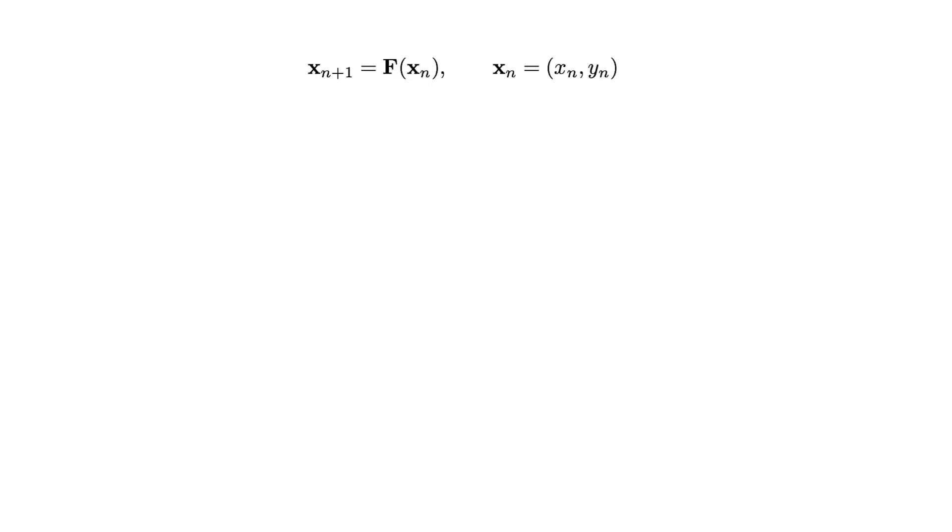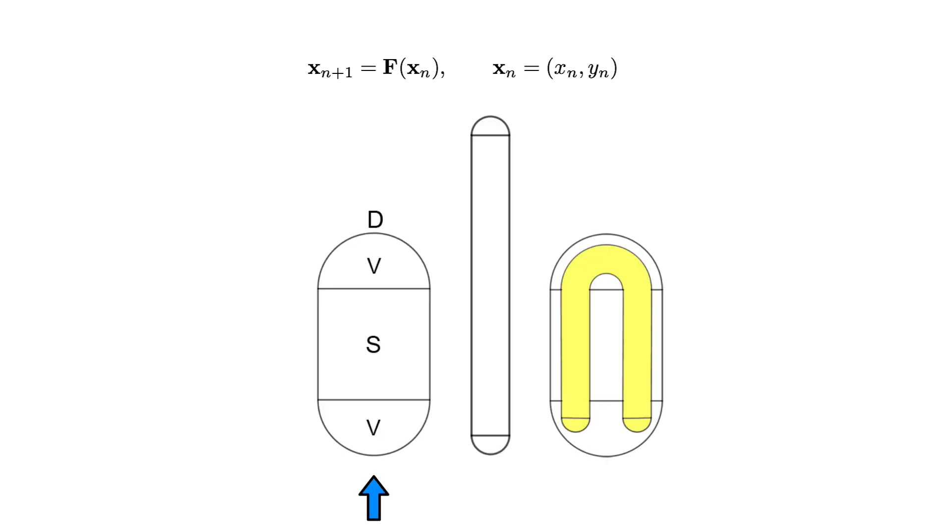To begin, we shall consider a two-dimensional map, say xn+1 equal to f of xn, where here x is a point in R2, and this map will be defined by the following geometrical process. You begin with the square S and the two ends v. Let's call the three pieces together D. You compress this shape horizontally and stretch it vertically, and then you bend it around until it becomes a horseshoe and place it back into the region D.